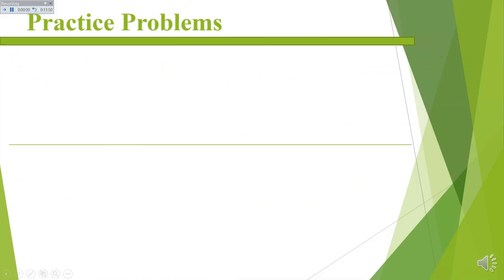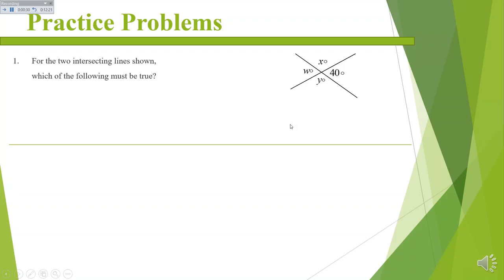Let's do some practice problems. We know that 40 degrees here is the same as W, from alternate interior angles. Then we have a straight line: if this is 40, we can figure out what this one is — take 180 minus 40 and get Y. They're asking us which of the following must be true. Figure out all of the degrees for each angle, then go through and see which one has to be true.